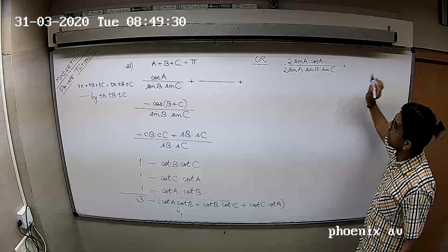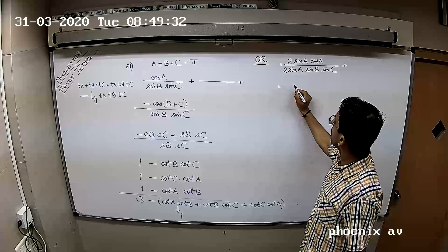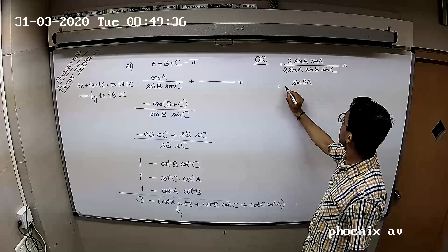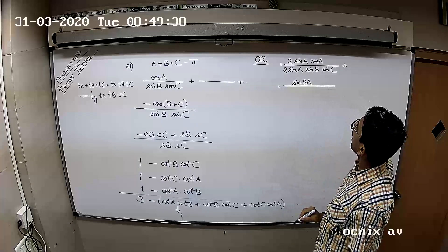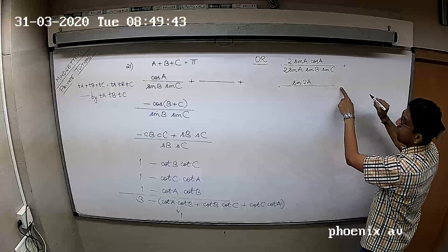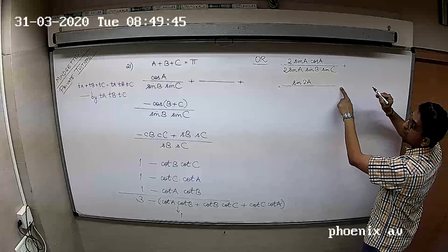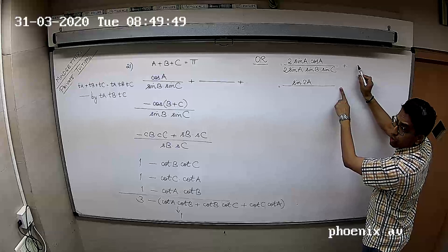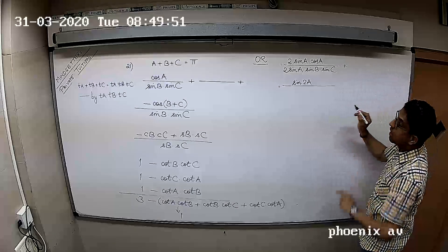I think this gives me sin 2A upon 2 sin A sin B sin C, plus the same expression will lead you to sin 2B and then sin 2C. So we are looking at sin 2A plus sin 2B plus sin 2C upon 2 sin A sin B sin C.